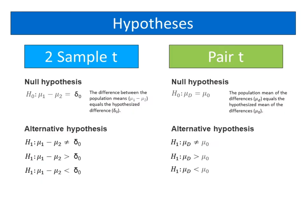For two sample T test, the null hypothesis is the difference between the population means equals the hypothesized difference. For a pair T test, the null hypothesis is that the population mean of the differences equals the hypothesized mean of the differences.